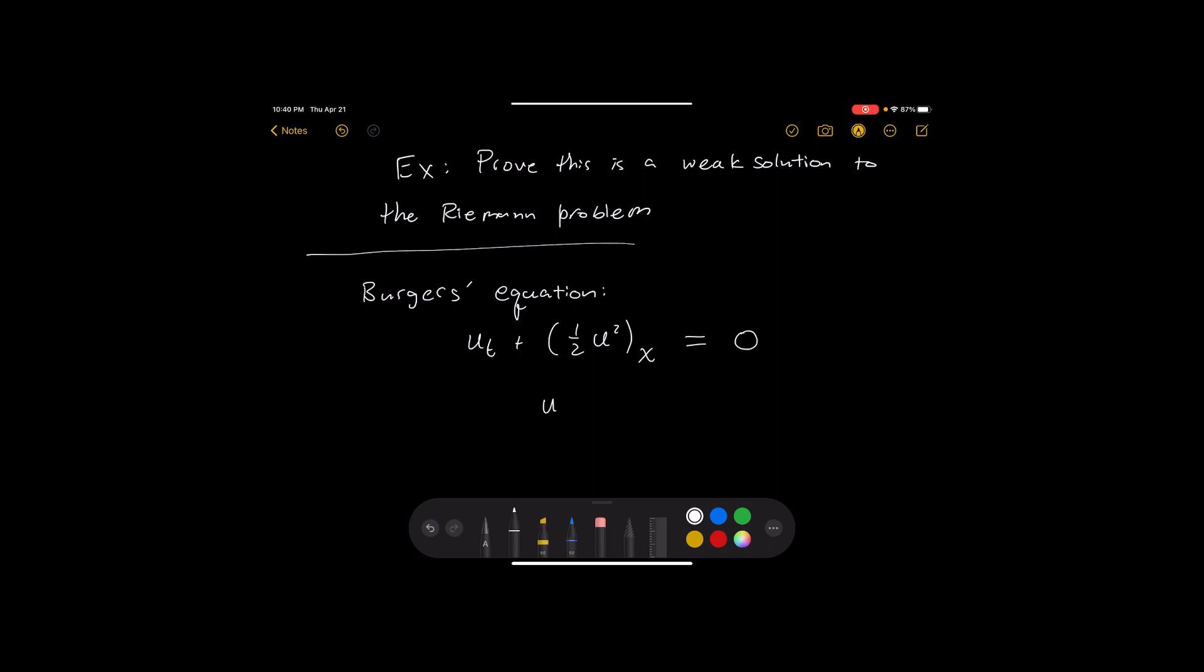And again our initial state is just two different values separated at x equals to zero. Okay, so a u_left and a u_right.